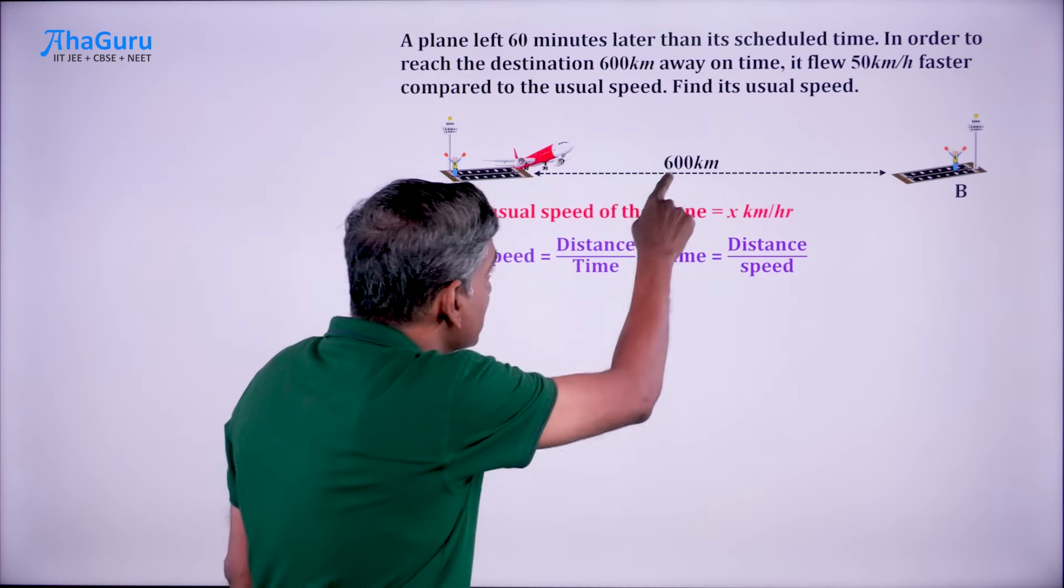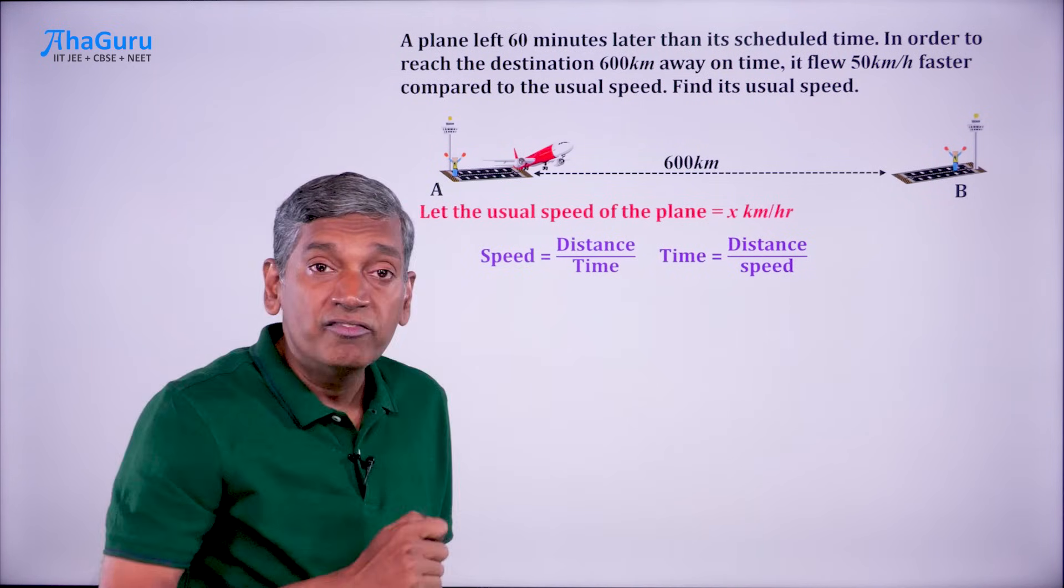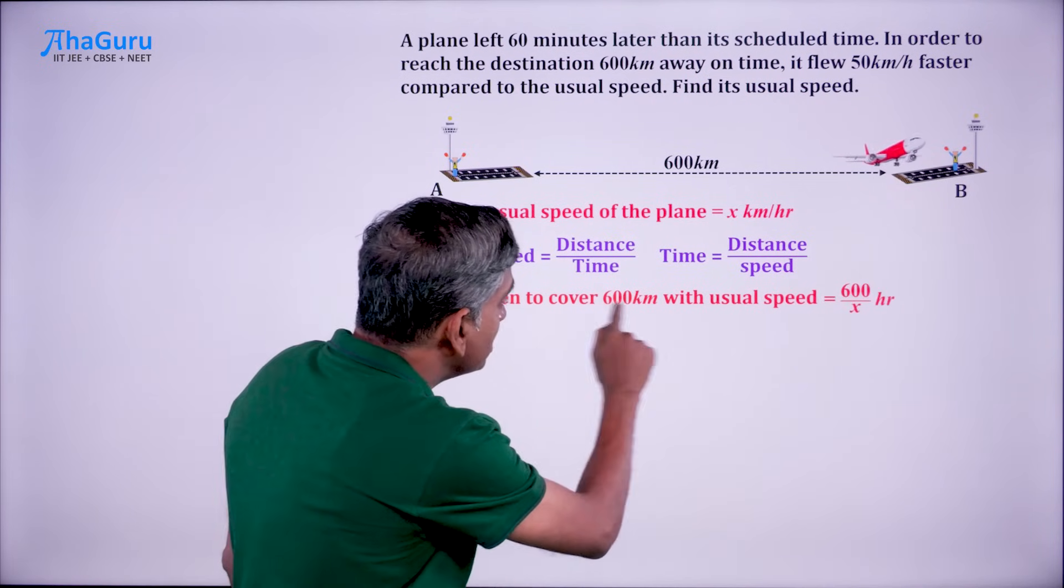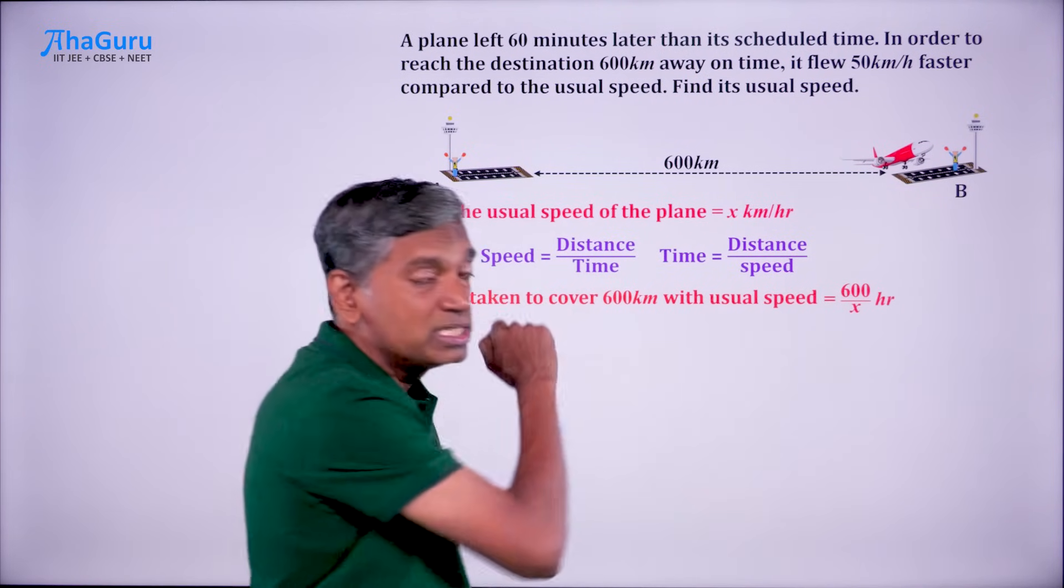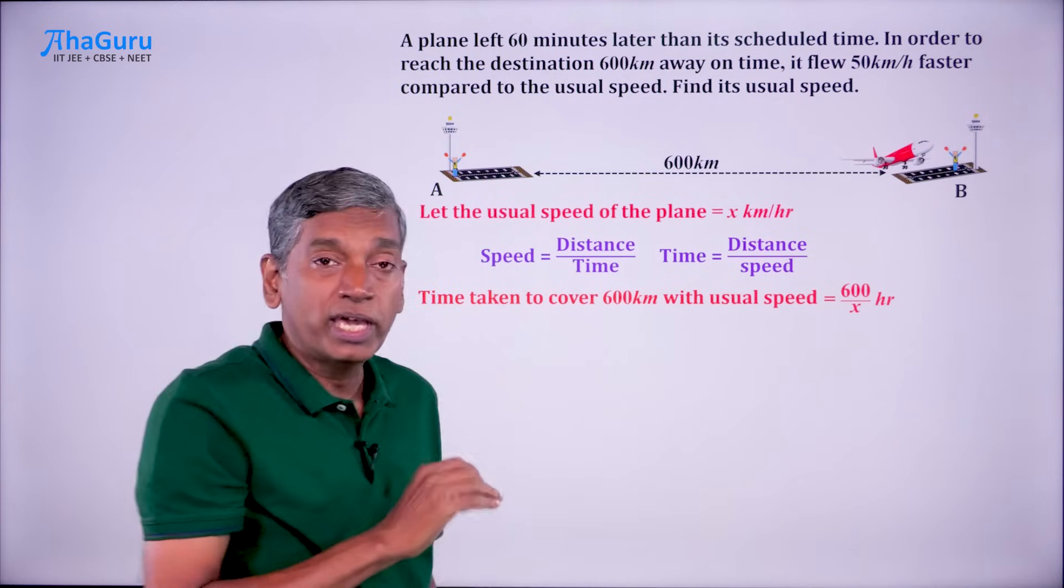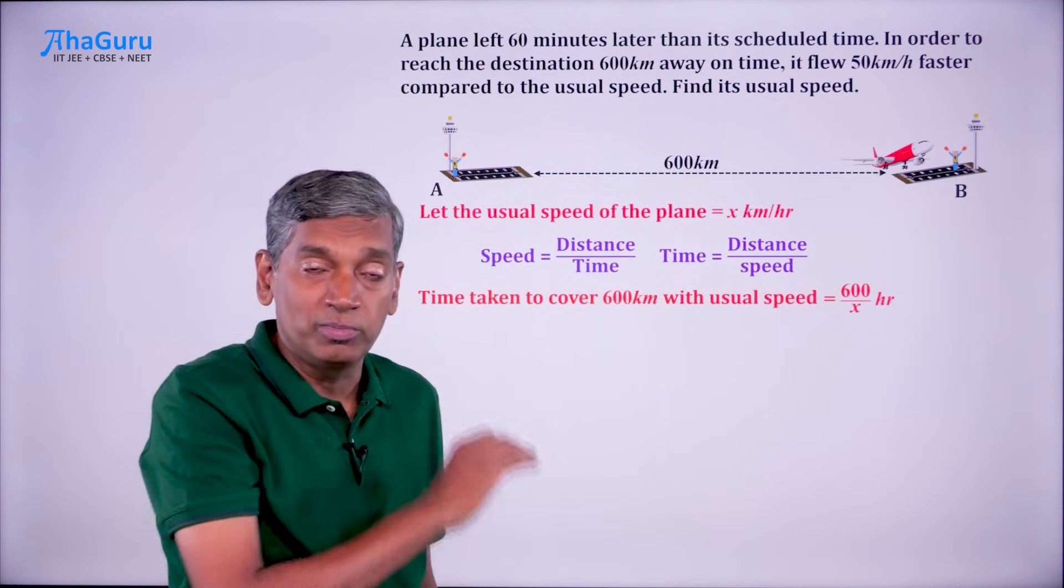We can say that the time taken to cover the 600 kilometers with the usual speed is 600 by x, because distance by speed. This is what happens normally.